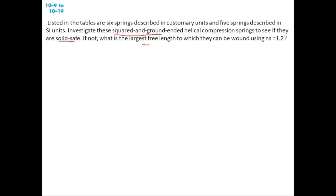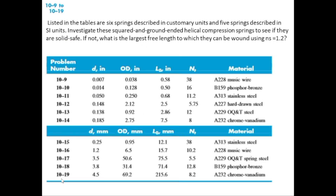In today's tutorial we will solve problem 10.9. In the book, for problems 10.9 to 10.19, the values are given in a table. For all these questions the spring is squared and ground. We will check whether they are solid safe or not, and if not, what is the largest free length of that spring for which the factor of safety equals 1.2.